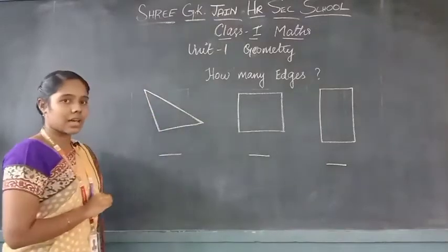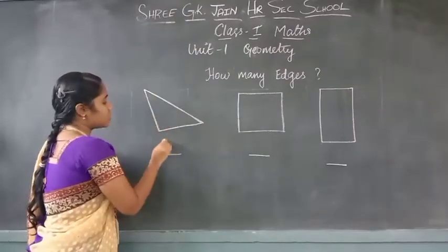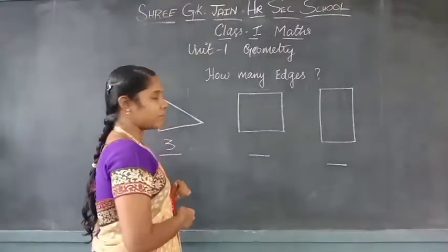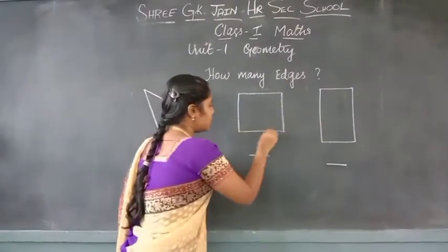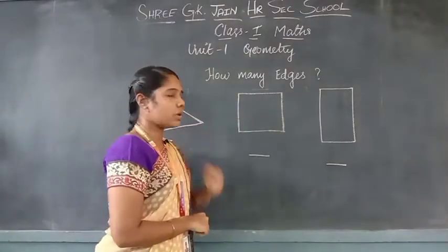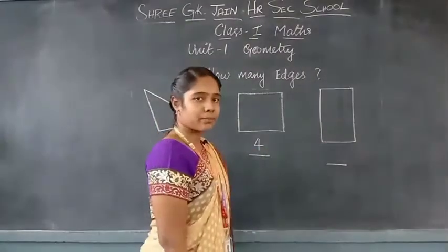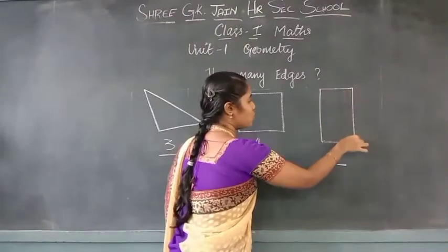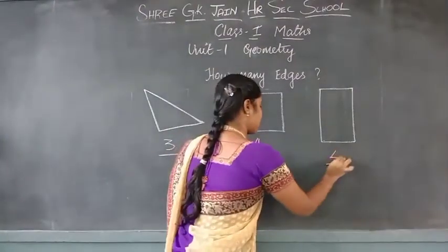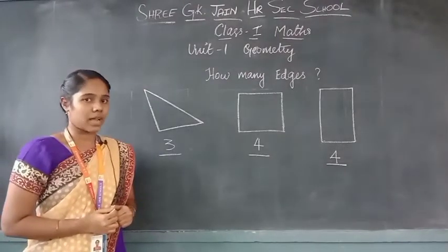How many edges are there in the first shape? 1, 2, 3. So, 3 edges. Now you are going to count for the second shape. How many edges? 1, 2, 3 and 4. So, 4 edges. Now, going on to the next one — how many edges for this shape? 1, 2, 3, 4. So, 4 edges. Now we are going to know how to write the edges of the given shape.